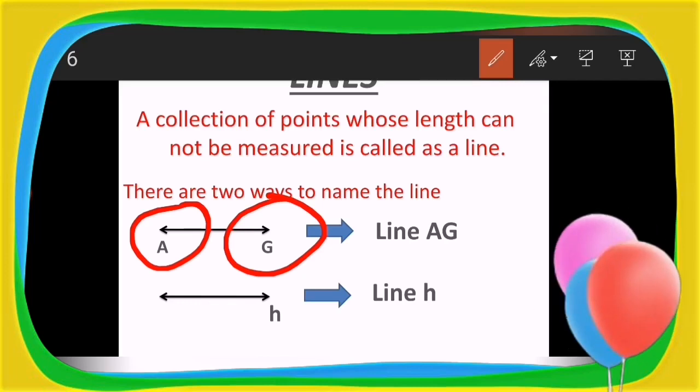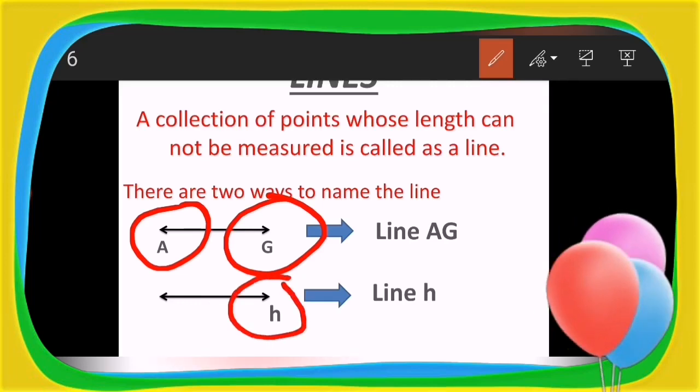The second way: the name of the line can be written with a small letter which is written at one of the arrowheads, and the name is exactly pronounced as line H, and the previous one line AG. I hope I made it very clear.